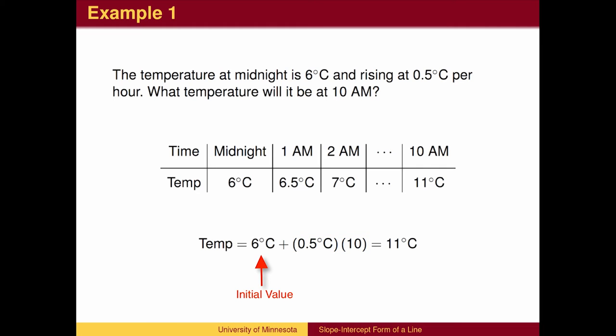The general formula is to start with an initial value for the temperature T, then add the change in temperature, which is found by taking the rate of change of temperature with respect to time, and multiplying it by the change in time.